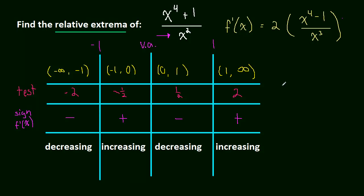So what did we figure it out? Well, to the left of negative 1, the function is decreasing, and to the right, it's increasing. So negative 1 is a minimum.